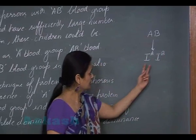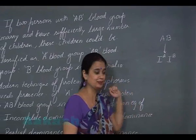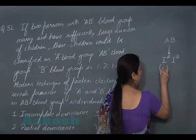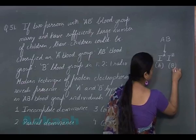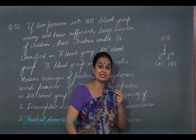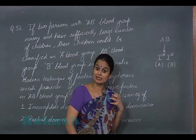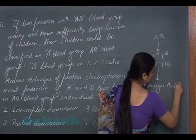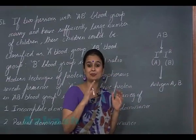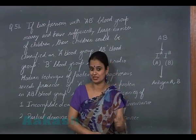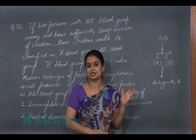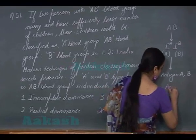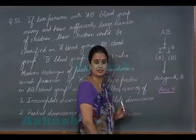The genotype of an AB blood group individual is I^A I^B — these are the two alleles responsible for the AB blood group. The I^A allele results in the formation of antigen A, and the I^B allele results in the formation of antigen B. Both I^A and I^B alleles are dominant, meaning both antigen A and antigen B are formed. When both alleles show their expression and both are dominant, this condition is known as co-dominance.